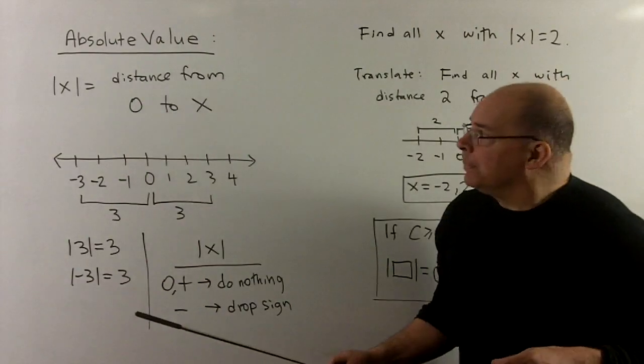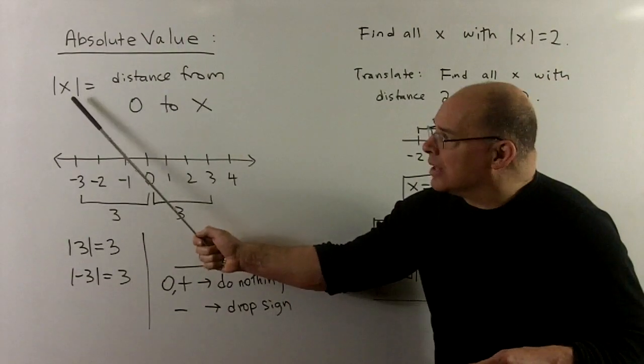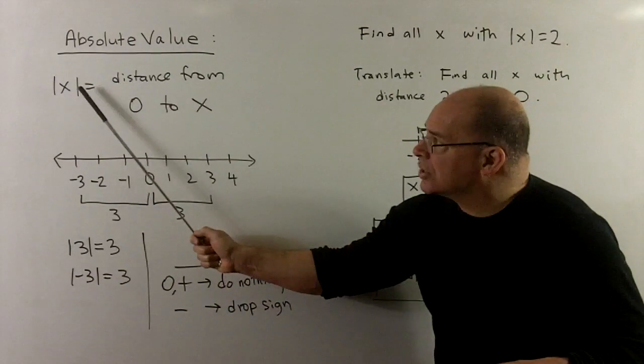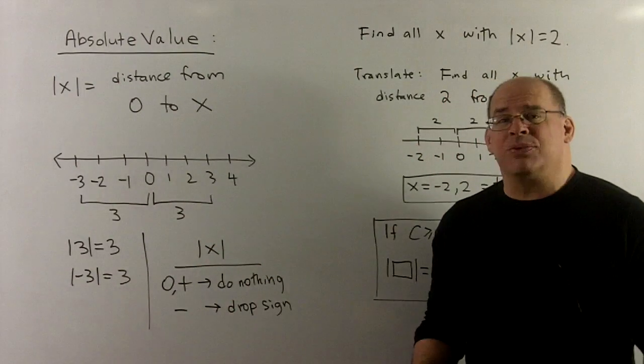For geometric definition, the absolute value of x, where x is a real number, we're going to put it between bars. That's just the distance from 0 to x.